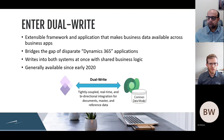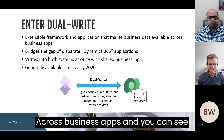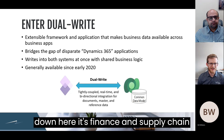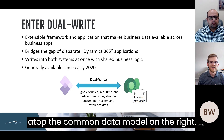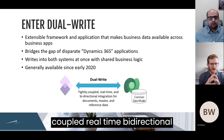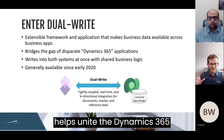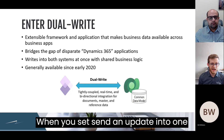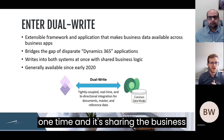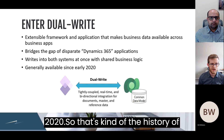With dual-write, this is an extensible framework and application that makes business data available across business apps. You have Finance and Supply Chain on the left, and Dataverse sitting atop the common data model on the right. It's a tightly coupled, real-time, bi-directional integration for documents, mastering, and reference data. This helps unite the Dynamics 365 applications so they actually share data — when you send an update into one system, it goes into both systems at once and shares the business logic from both. Dual-write has been generally available since 2020 and has quickly evolved since then.